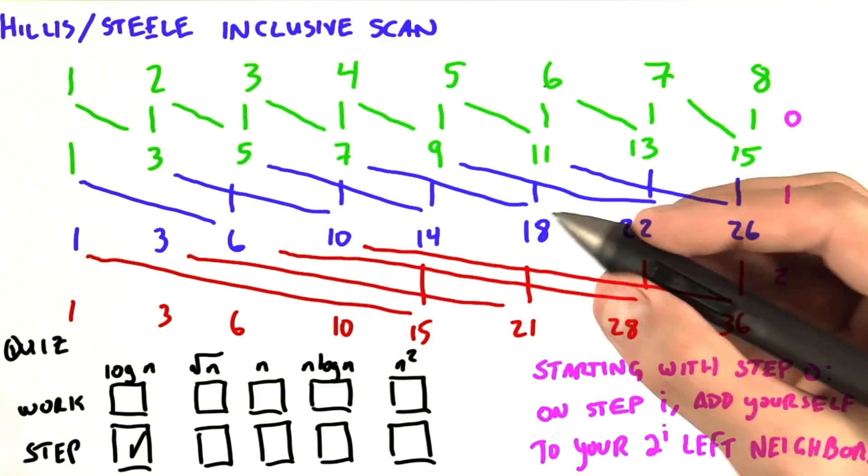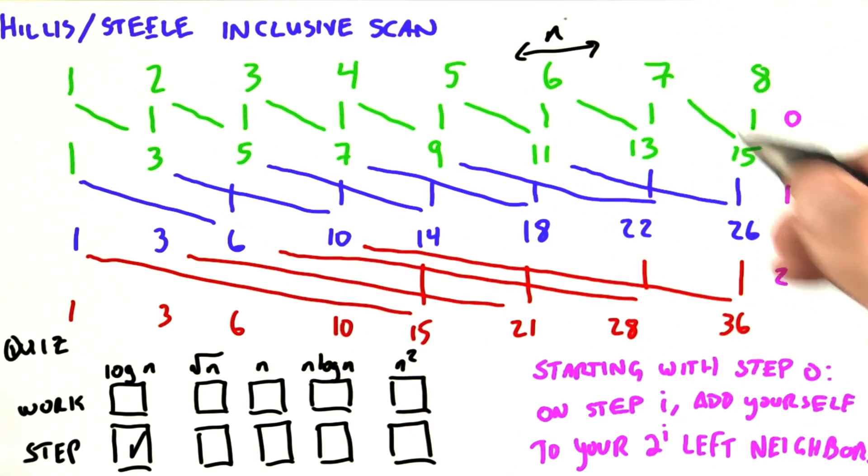So how big is this rectangle? Well, in the x direction, the rectangle is n items. We're scanning an array of n items. We already computed what the y size of this rectangle is.